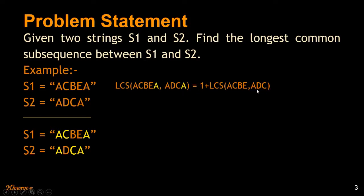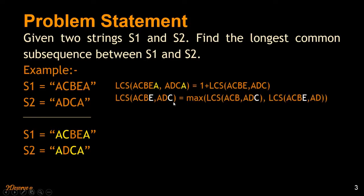Let's try to do the LCS of this. E and C do not match, so we cannot add one. What we do is leave out one character at a time. We leave out E and compute LCS of ACBE and ADC, and we leave out C and compute LCS of ACBE and AD, then take the max of that. There are two rules: if the characters match, leave both and compute LCS of the remaining strings adding one. Else, leave one character at a time and compute the max of LCS of both combinations.